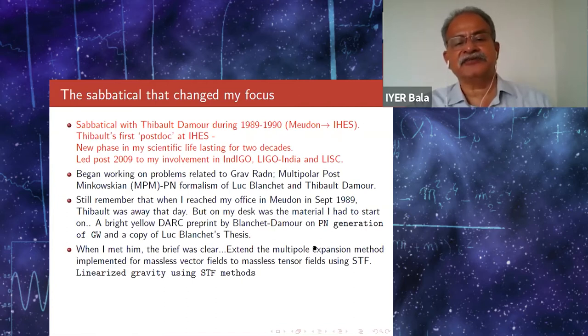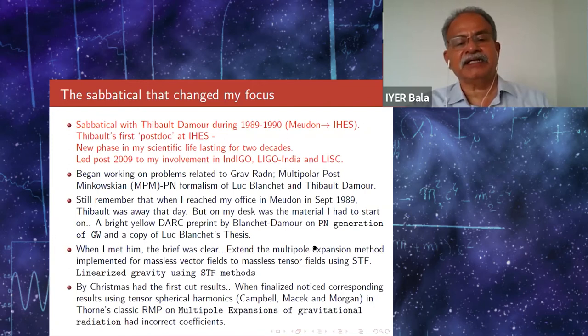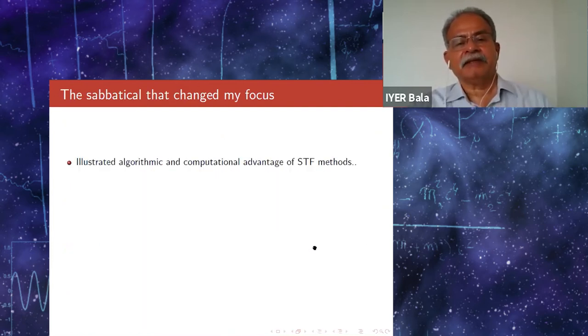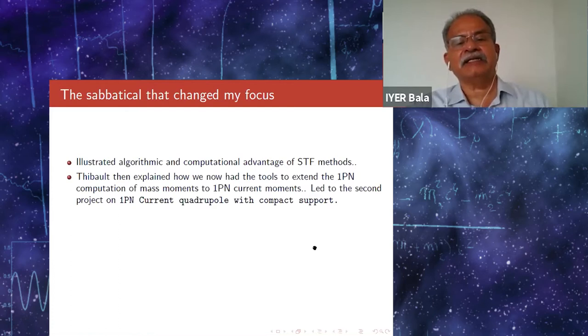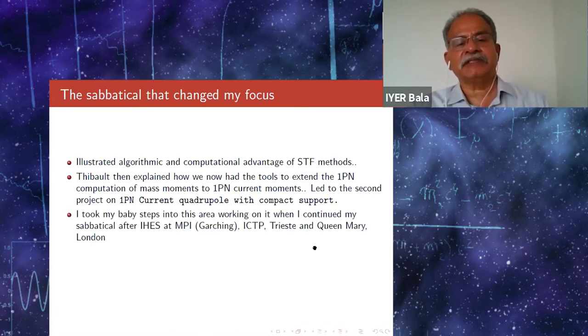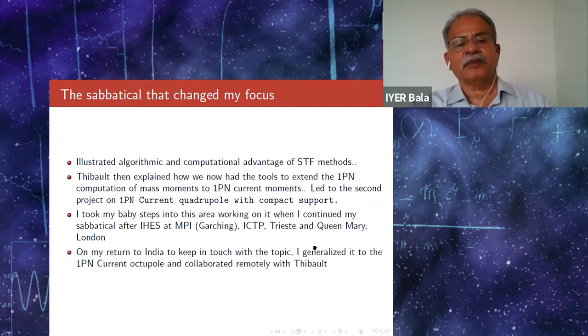Investigate linearized gravity by using STF methods. By Christmas, we had the first cut results. When finalized, we noticed that the corresponding results using tensor spherical harmonics had incorrect coefficients. This illustrated the algorithmic and computational advantage of symmetric trace-free methods. Thibaut then explained how we had the tools to extend the 1PN computation of mass moments to 1PN current moments, and this led to the second project on the 1PN current quadrupole with compact support. On my return to India, to keep in touch with the topic, I generalized it to the 1PN current octopole and collaborated remotely with Thibaut.